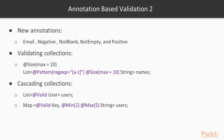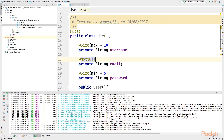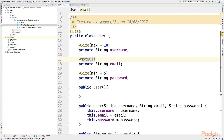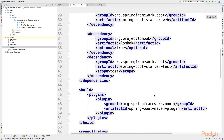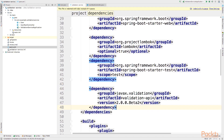Spring also supports Bean Validation 2. The new features include a set of new annotations like @Email, @Negative, @NotBlank, @NotEmpty, and @Positive. It also adds the possibility to do validation on collections, and cascading validation on collections — validating each value inside a collection, as well as the key and value of a map. Let's stop the server and add to the POM XML the dependency for Bean Validation 2.